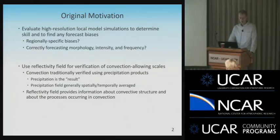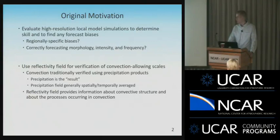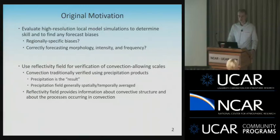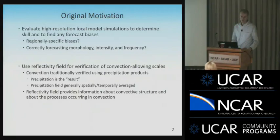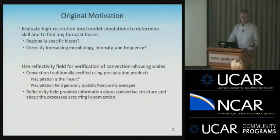We're giving these forecasts to forecasters, so are we correctly forecasting morphology and intensity? Are we correctly forecasting the frequency of convection? And are there any regionally specific biases we see in the region? We're using the radar reflectivity field and simulated reflectivity field for verification of these convection-allowing scale models — primarily three-kilometer models — because convection has traditionally been verified using precipitation products. Reflectivity gives you instantaneous information about convective structure that generates that precipitation field, so we're going to look at reflectivity through height.